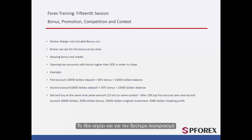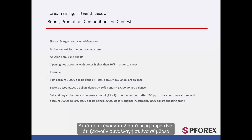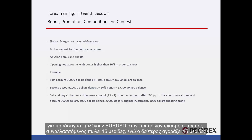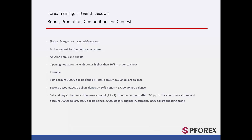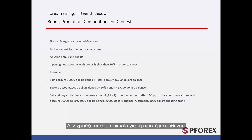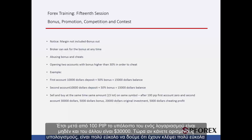What these parties do is they start to trade on one symbol at the same time with opposite directions. For instance, they choose EUR against USD. In the first account, the trader sells 15 lots, while the second trader buys 15 lots. Speculating the correct direction is not important at all. So after 100 pips, one of the accounts is at zero and the other one is at $30,000. It is very easy to see that they have cheated very easily.